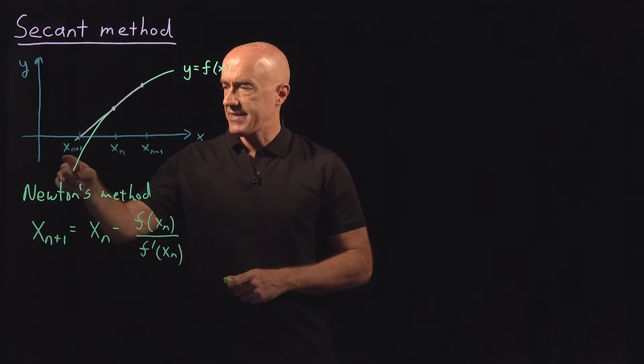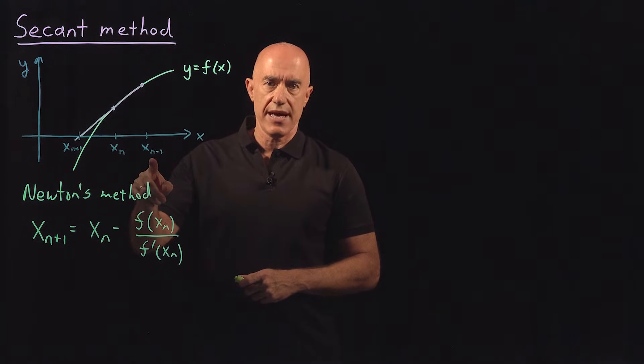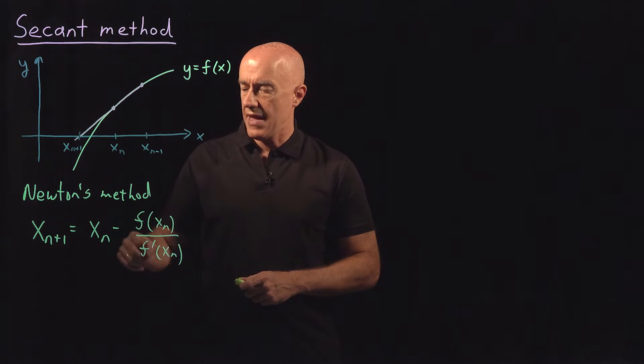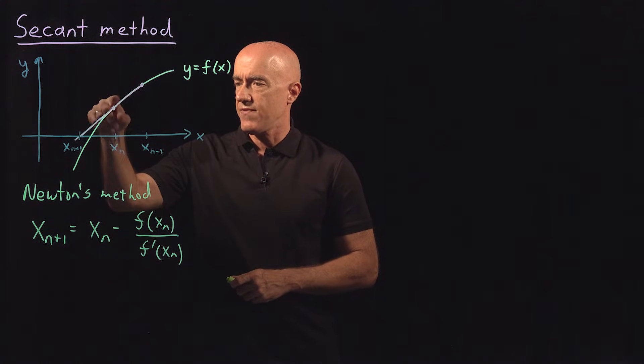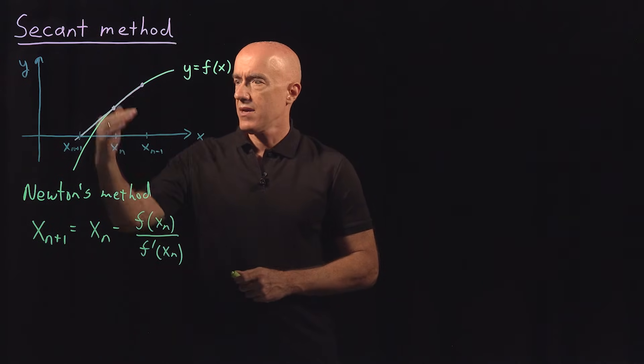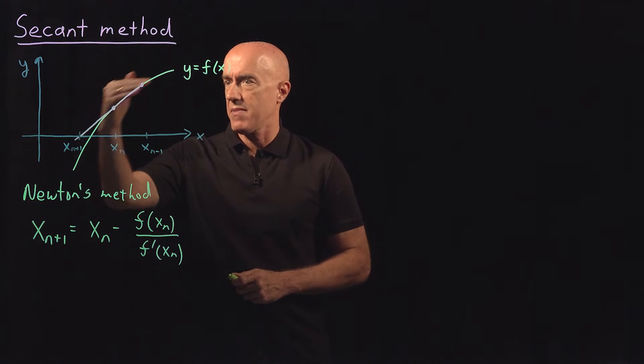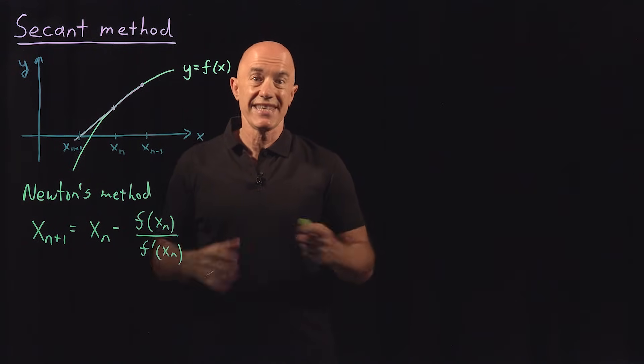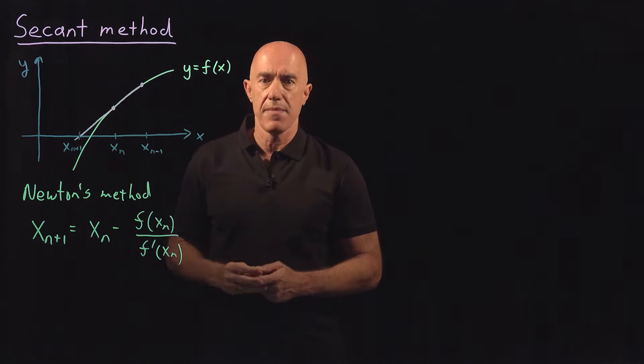So to get x_(n+1), we can use x_n and an additional point, x_(n-1), and then find an approximation to this derivative using the value of the function at x_n and x_(n-1). The line that goes through these two points, f(x_n) and f(x_(n-1)), is called the secant line to the curve, and that's why this is called the secant method.